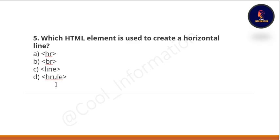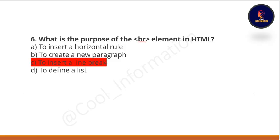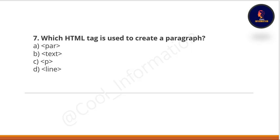Which HTML element is used to create a horizontal line? Options: hr tag, br tag, line tag, or h-rule tag. The correct option is A — hr tag. Next: what is the purpose of the br element in HTML? Option A: to insert a horizontal line. Option B: to create a new paragraph. Option C: to insert a line break. Option D: to define a list. The correct option is C — to insert a line break.